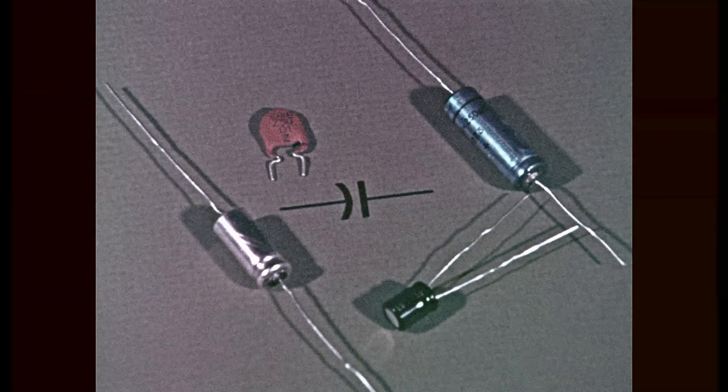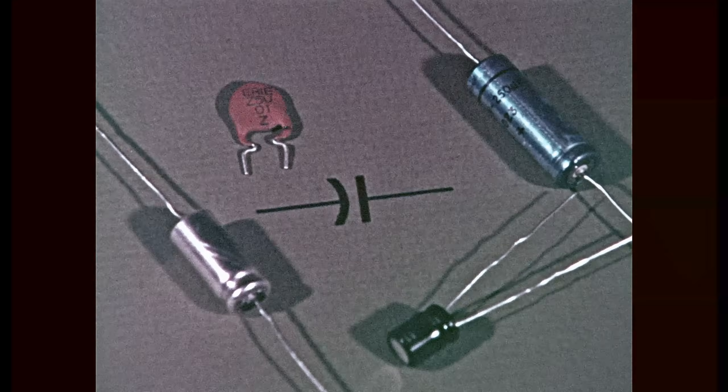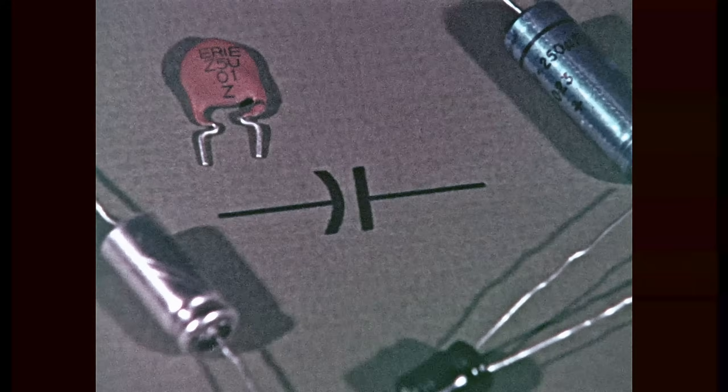A capacitor blocks the flow of direct current, but alternating current can pass through it unaffected. It stores electrons and releases them.